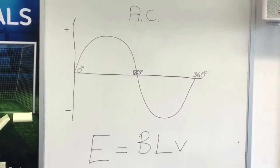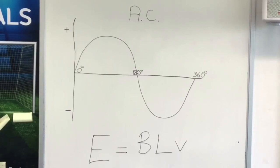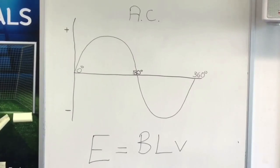We increased the induced EMF by increasing the speed of the conductor through the magnetic field and by increasing the amount of copper passing through it. The one thing we didn't manage to change was the strength of the magnetic field. The formula is: E (EMF) = B (flux density in teslas) × L (length of conductor in meters) × V (velocity in meters per second). So induced EMF is affected by a stronger magnetic field, a longer conductor — which we increased by adding more coils — and greater velocity through the magnetic field.